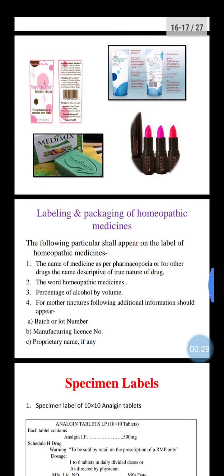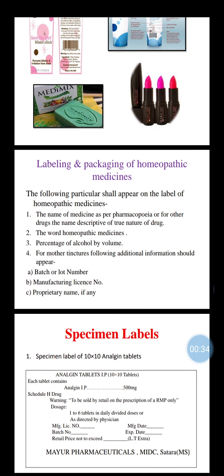The following particulars shall appear on the label of a homeopathic medicine: first, the name of the medicine as per pharmacopoeia; for other drugs, the names are descriptive of the true nature of the drug, written as per pharmacopoeia. Second, the word 'homeopathic medicine' is written on the drug. Third, percentage of alcohol by volume.